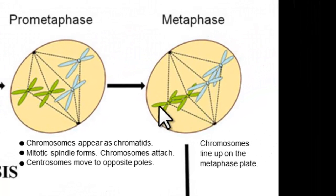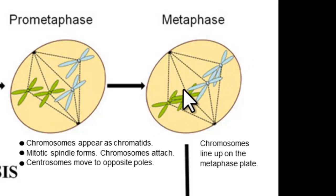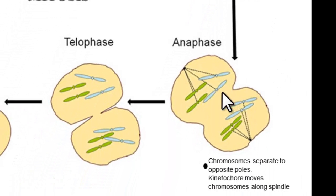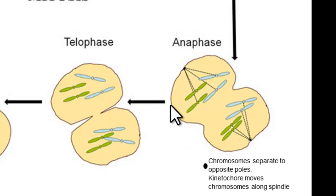The first stage is that each of the pairs will line up in the middle of the cell — we call that metaphase. Our next stage is anaphase, and that's where the spindle fibres and the kinetochores actually wind the chromosomes. These proteins wind the chromosomes down the spindle fibres and drag the chromosomes to the poles of the cell — to the other ends.